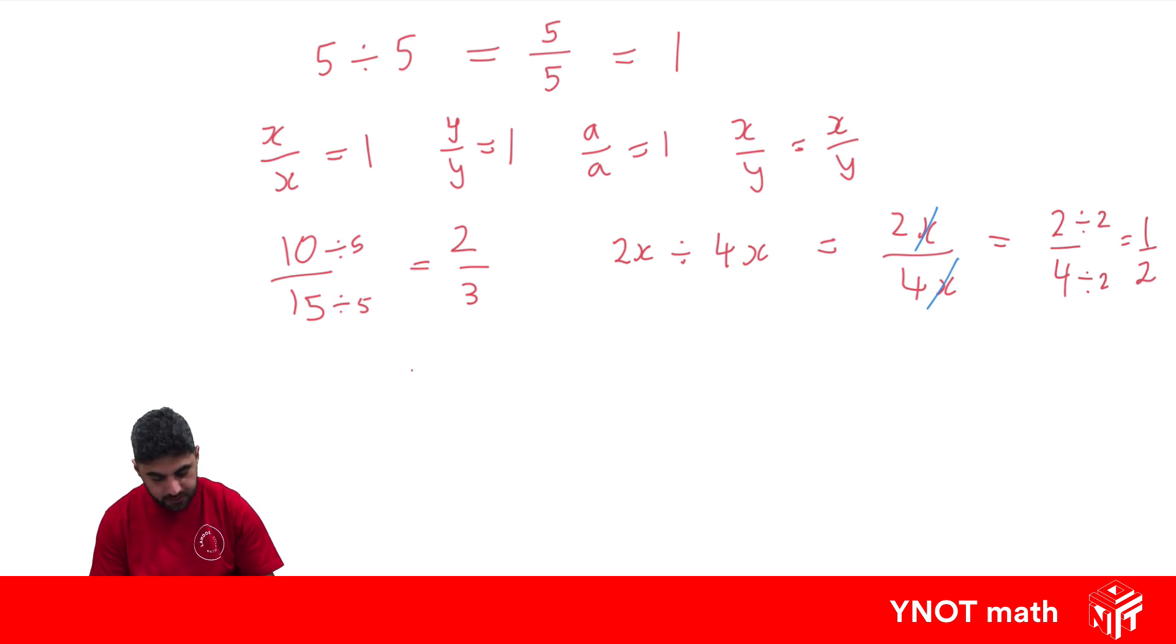Let's look at 8ab divided by 12ab. So we write it as a fraction, 8ab over 12ab. Any terms that are the same divide into each other and leave behind 1.